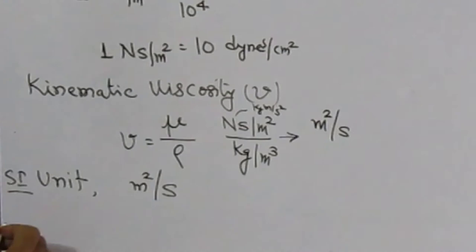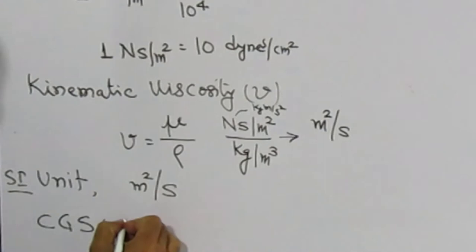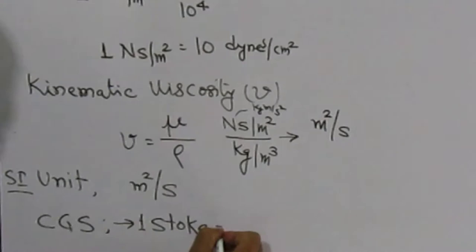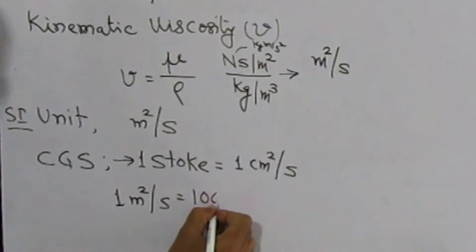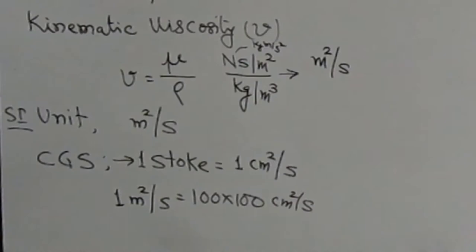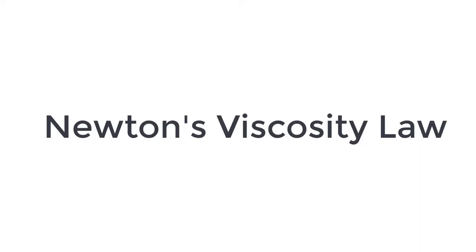In CGS units, kinematic viscosity is also known as stoke, and 1 stoke equals 1 centimeter square per second. Then, 1 meter square per second equals 100 × 100 centimeter square per second, or 10 to the power 4 centimeter square per second.